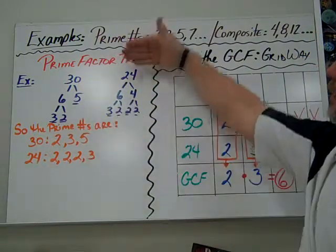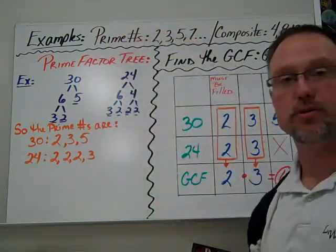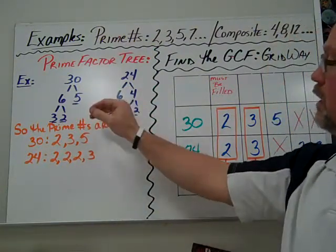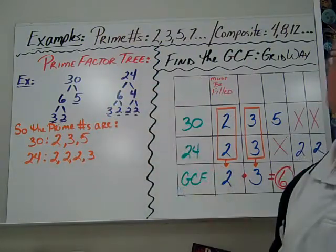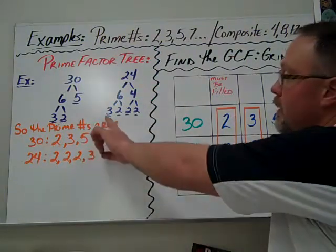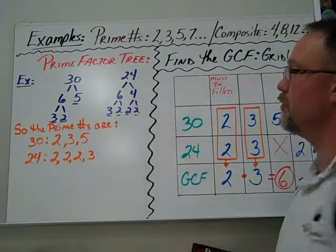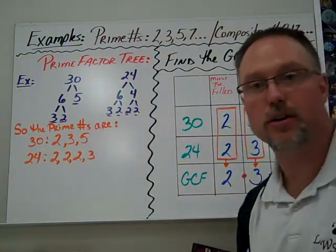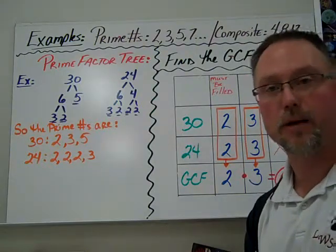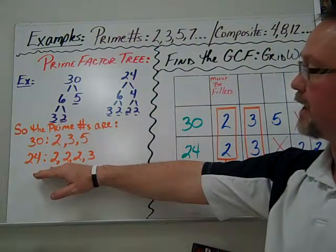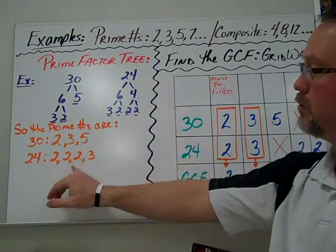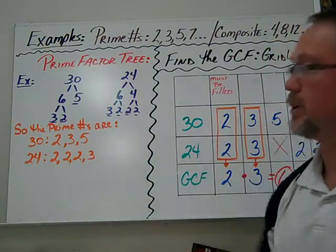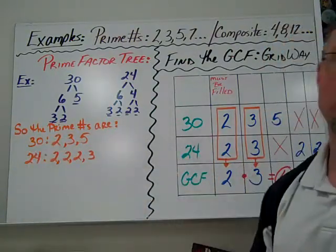For the other one, 24, we chose 6 and 4. You could choose 8 and 3, 12 and 2. I chose 6 and 4. 6 is not prime, neither is 4, so we have to break it down again. So we have 3 and 2 for 6, 2 and 2 for 4. And again, where you see these lines, the little dash lines underneath it, that's kind of where your tree stops because it's a prime number. So our prime factors or prime numbers for 24 are 2, 2, 2, and 3. So if we multiply these together, we'd get 24. If we multiply these together, we'd get 30.